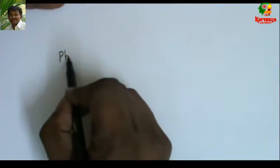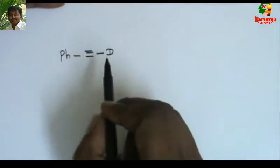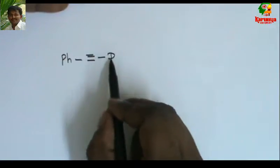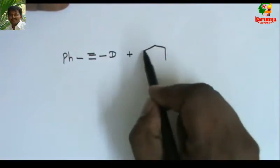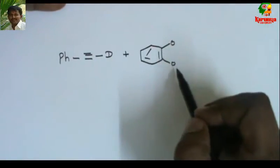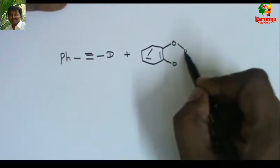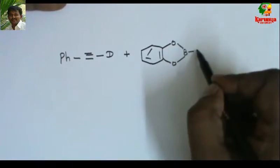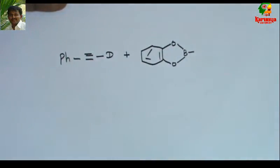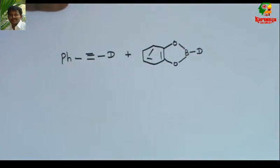First, let us go to hydroboration. It is deuterated phenylacetylene — if it were H, that would be phenylacetylene. This is deuterated phenylacetylene, and the reagent is deuterated catechol borane. When both hydroxyl groups are on a benzene ring it is called catechol, and with hydrogen it is catechol borane. Since it is D, it is deuterated catechol borane.